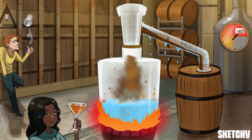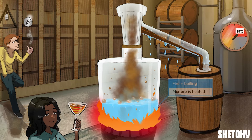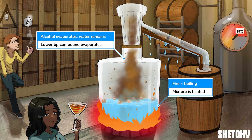Let's get into the nitty-gritty of how simple distillation actually works — and luckily, it's actually very straightforward. First, the mixture in the distilling flask is heated. As the temperature rises, the component with the lowest boiling point should evaporate while the rest of the mixture remains a liquid — kind of like how the ethanol in this whiskey mix has vaporized while the water stays behind. Ethanol vapor is, well, clear; we just made it whiskey-colored here to help you visualize the process.